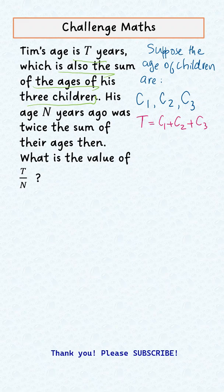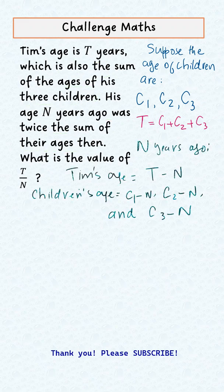Then we are told that N years ago his age was twice the sum of their ages then. So N years ago his age would have been T minus N, and N years ago the children's ages would be c1 minus N, c2 minus N, and c3 minus N.